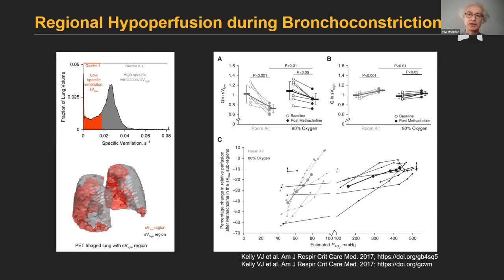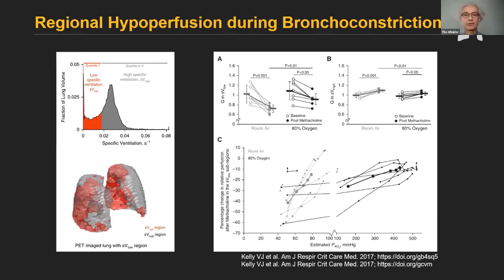The question is what are the potential mechanisms, and we speculated about two: one is dynamic hyperinflation within ventilation defects, and the other is potentially the deformation of blood vessels running outside of the constricting airways, whereby changing their hydraulic diameter the airway constriction may also affect vascular resistance. As a final point, I'd like to talk about an issue from PET imaging: the relationship of lung density and tissue volume.